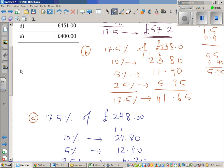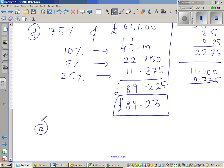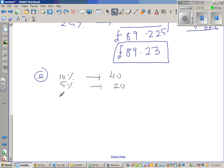And finally it's £400. So that was pretty easy. So 10 percent of 400 is 40, 5 percent is 20, and 2.5 percent is 10. Which is 40, 60, 70 pounds.